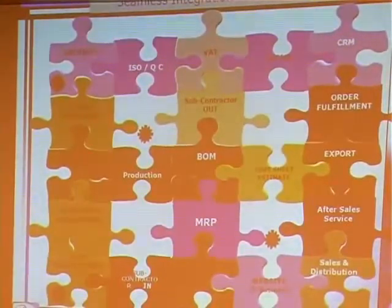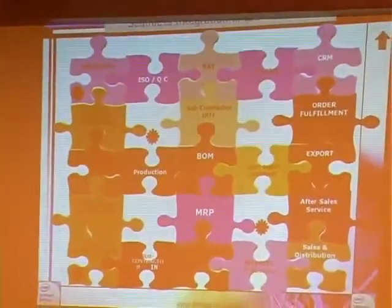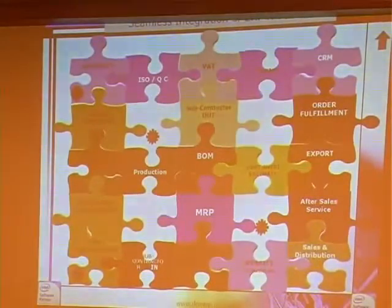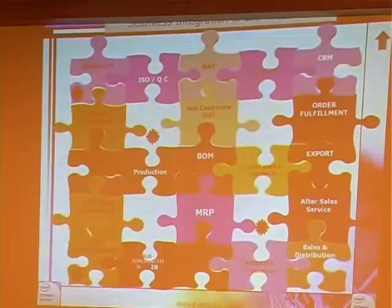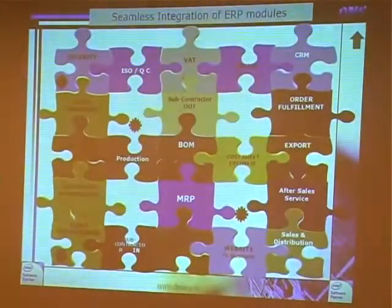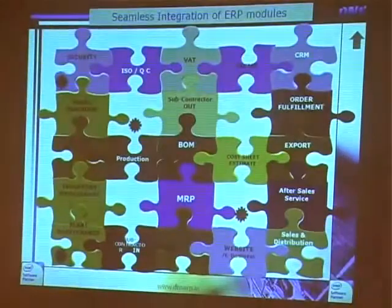So you have the production module, the cost sheet module, subcontracting out. Each module we will discuss in greatest detail — inventory management, imports, exports, subcontracting out. The material is at the center and all the other modules evolve around that.